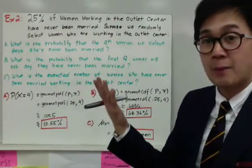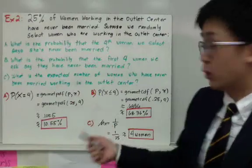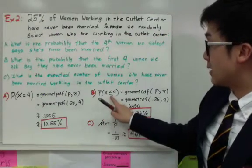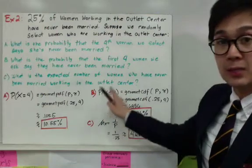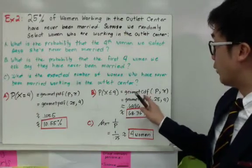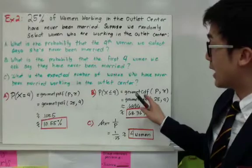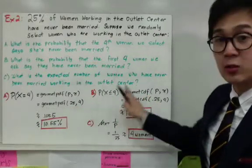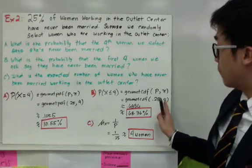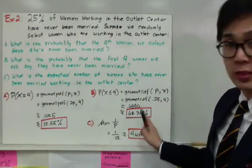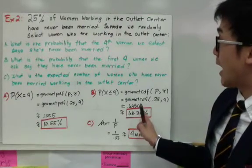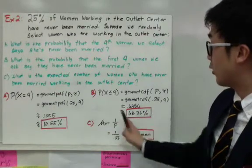To use your calculator and your geometric probability, P of x will be less than or equal to 4, because those are the possible women who, when you ask them, will answer she's never been married. Using your calculator, we will now use geomCDF. It's no longer PDF because we're using an inequality symbol. The geomCDF will be 0.25 and 4, and using your calculator, it will give you 68.36%. The probability that the first 4 women selected and asked at the outlet center will give this answer is 68.36%.